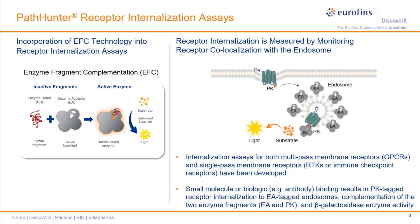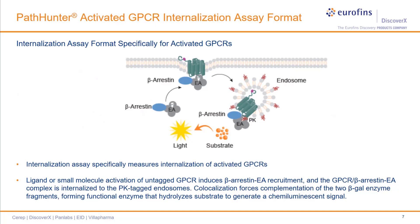However, there is a second receptor internalization format which specifically examines internalization of activated GPCRs. Like the more generic receptor internalization assay, this activated GPCR internalization assay consists of an enzyme fragment localized to the endosome. In this case, the PK fragment is tagged to the endosome, and beta-arrestin instead of the receptor is tagged with the EA fragment. Upon GPCR activation following ligand receptor engagement, the beta-arrestin EA fusion protein is recruited to the receptor, and this complex moves to the endosome, resulting in enzyme complementation and a gain of signal.